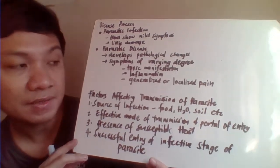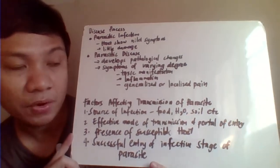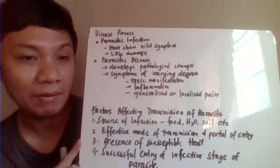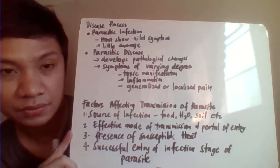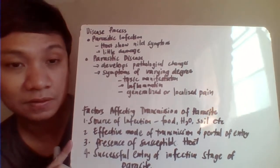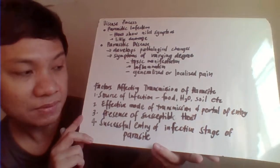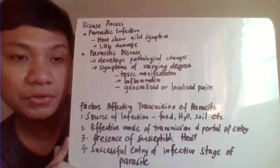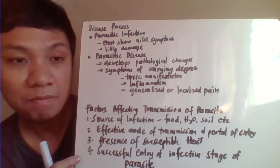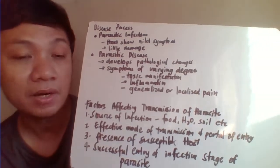Factors affecting transmission of parasites include: the source of infection (food, water, soil, or others); an effective mode of transmission and portal of entry; a susceptible host (immune status matters — some parasites are opportunistic); and successful entry of the infective stage. You must acquire the infective stage specifically — acquiring another developmental stage will not result in infection.